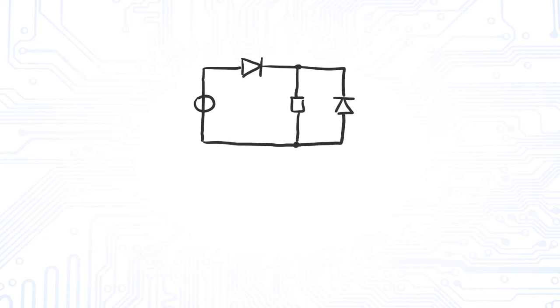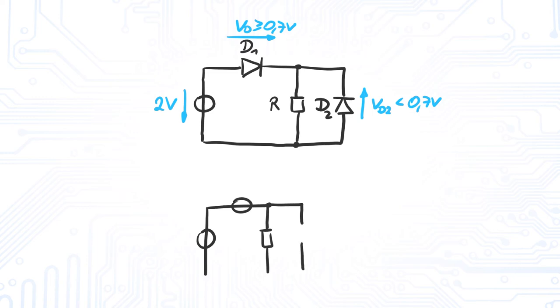During circuit analysis, we simply check the voltage over the diodes. In this example, it is fairly obvious that the voltage at D1 will be larger than 0.7 volts, while the voltage at D2 will be smaller than 0.7 volts. We replace the diodes by a short or open accordingly to get a simplified version of the circuit. Now the voltage over resistor R and eventually the current can easily be determined.